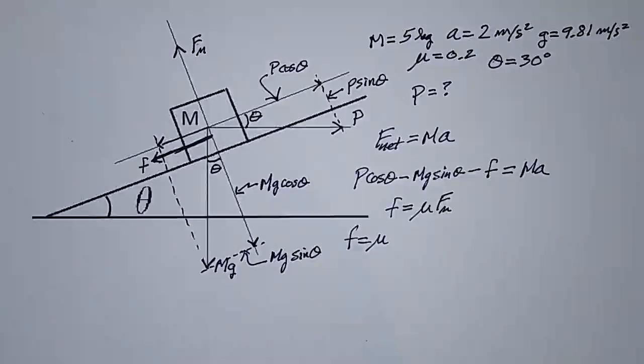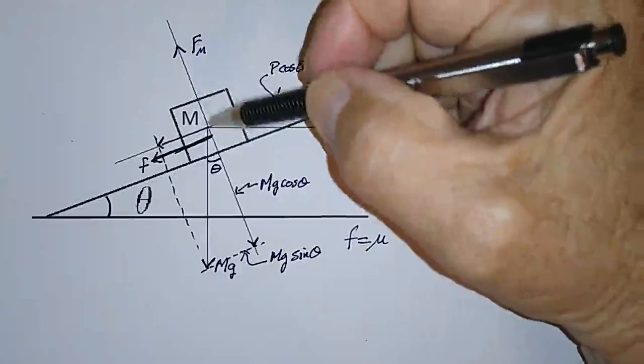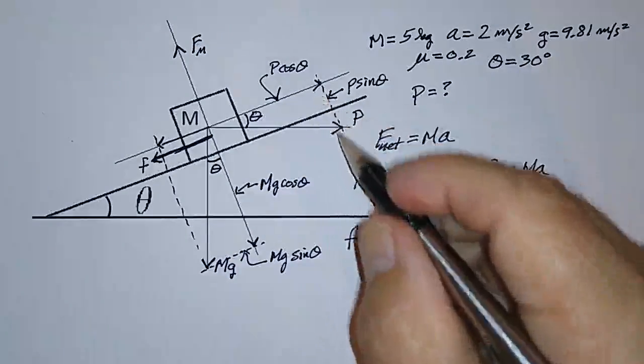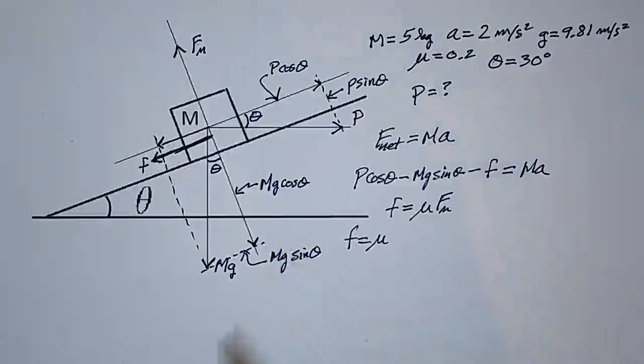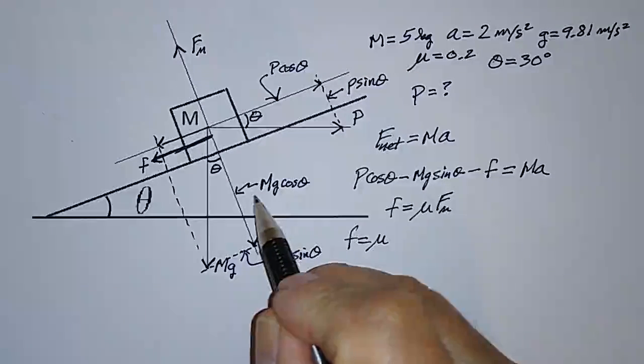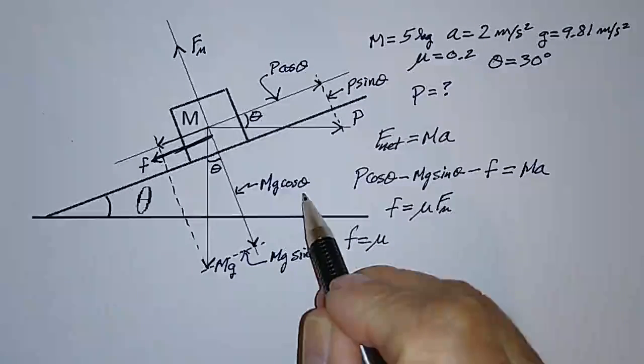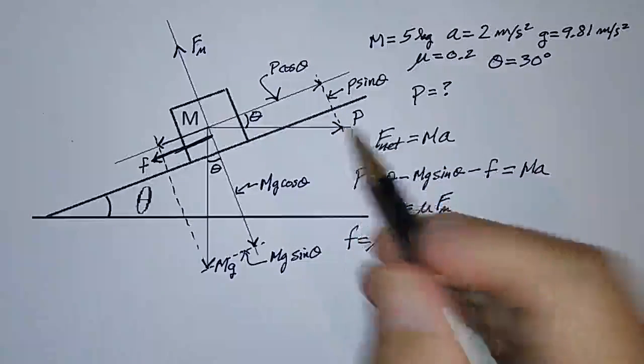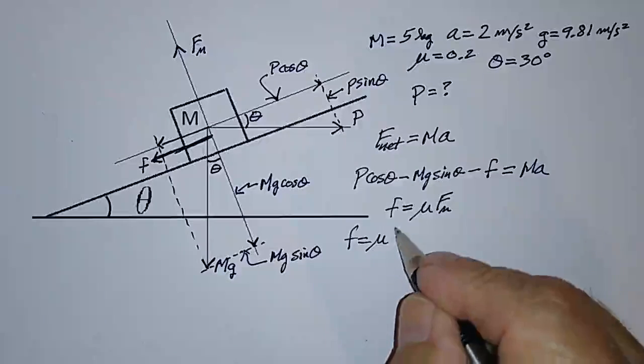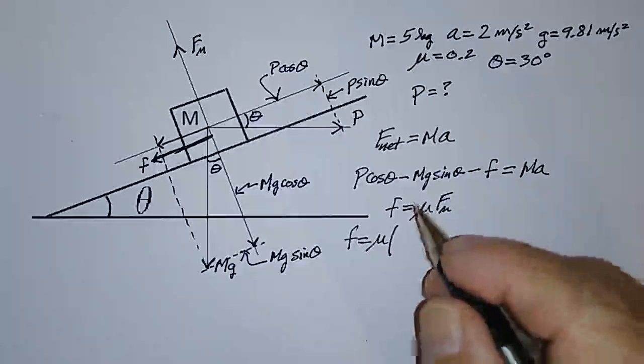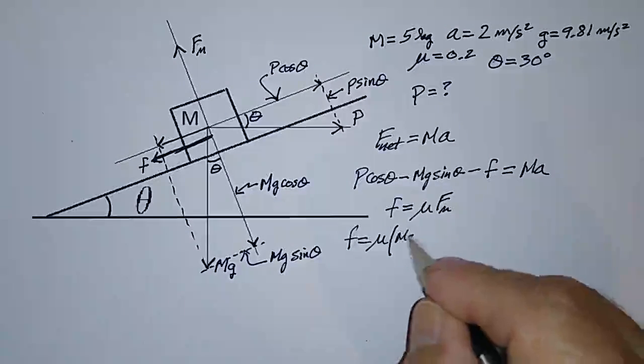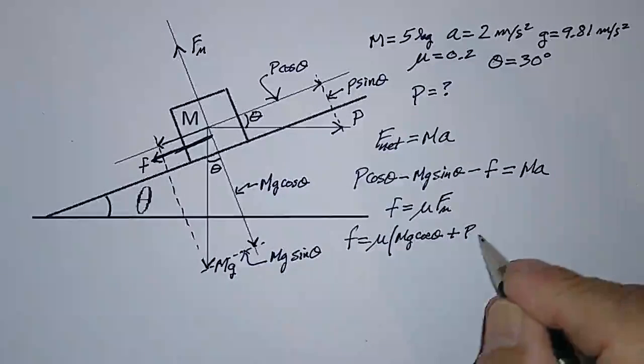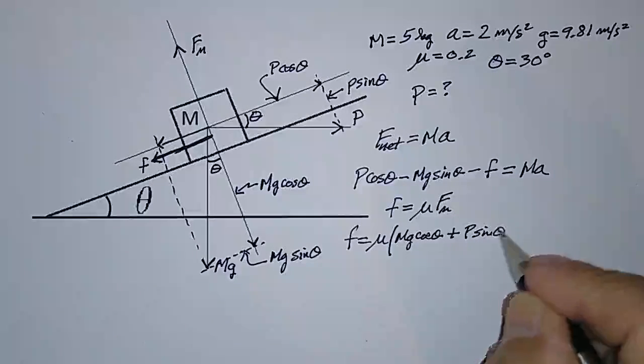So let's take a look at the normal force. The normal force is in this direction, and there are two forces acting opposite to it that are producing it. In fact, there's the component due to gravity perpendicular to the plane, and there's the component of the pushing force perpendicular to the plane. So the normal force, then, is equal to M G cosine theta, plus P sine theta.